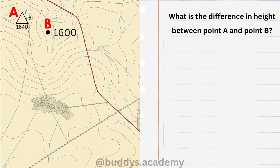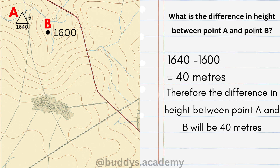Now let's do a quick example. The question reads: what is the difference in height between point A and point B? We subtract the smaller height from the bigger height. Point A is trig beacon 6 with a height of 1640 meters, and point B is a spot height reading 1600 meters. So 1640 minus 1600 gives us 40 meters — the difference in height between point A and point B is 40 meters.